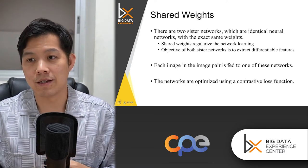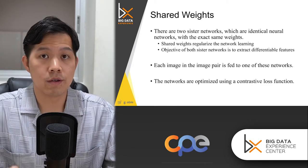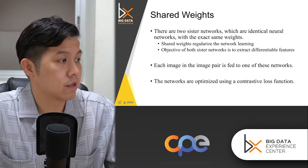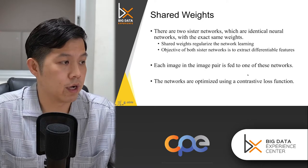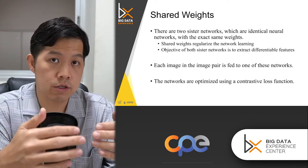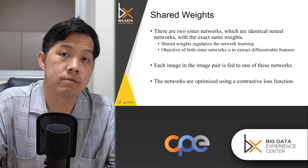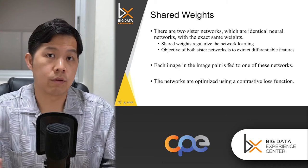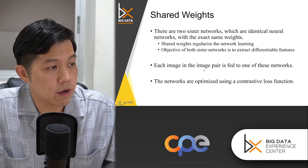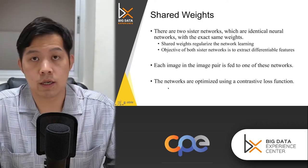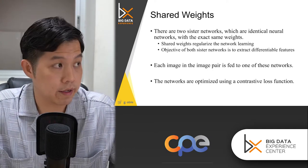In training, each input needs to be paired with another one. If they are from the same source, mark it as one; if from different sources, mark it as zero. The network has to be optimized using contrastive loss. There is also a term called triplet loss. The network needs to optimize using this loss function.